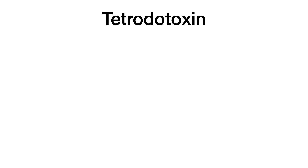Beginning with tetrodotoxin, the mechanism is that this toxin blocks voltage-gated sodium channels. Because we're blocking the part of the action potential that causes depolarization, you get a net decrease in depolarization. Correlating decreased depolarization with clinical features, you will see things that happen when action potentials don't fire: paresthesias, decreased reflexes, and generalized muscle weakness.